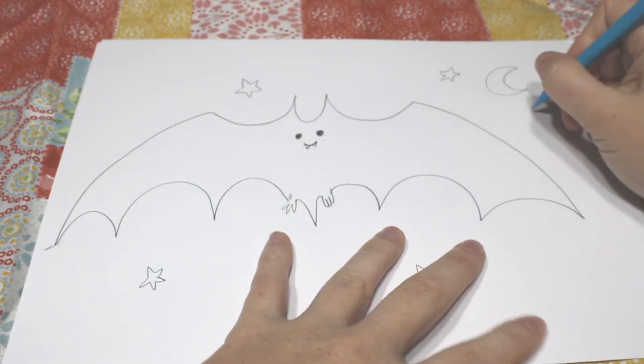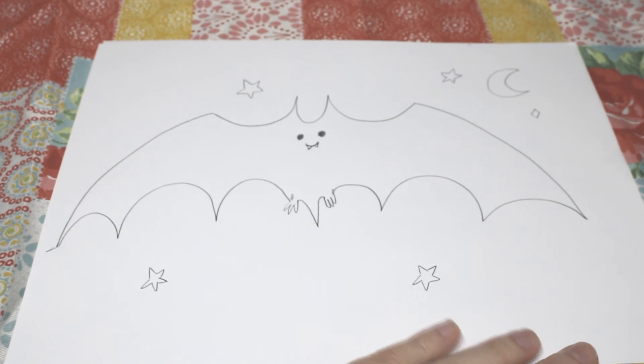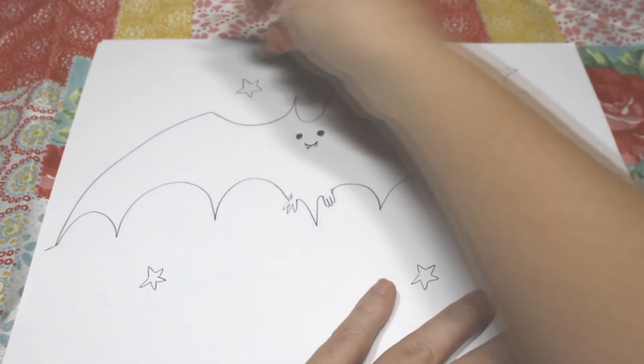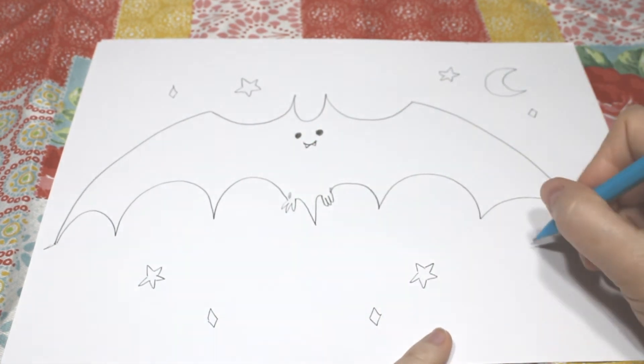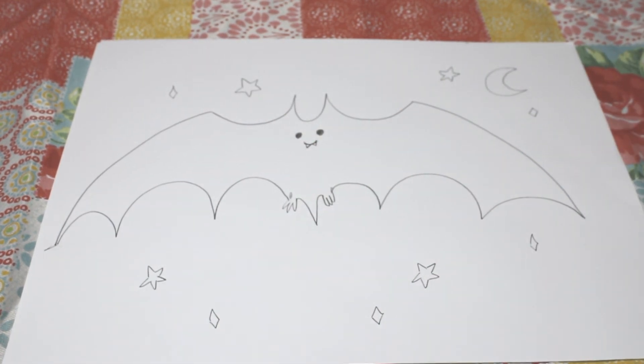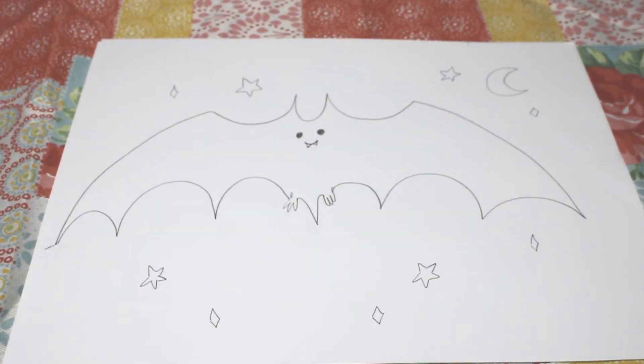Or you could do diamond kind of stars. One, two, three, four. One, two, three, four. I'll let you guys practice that, because we are out of time. Have fun drawing your bats, guys. Bye.